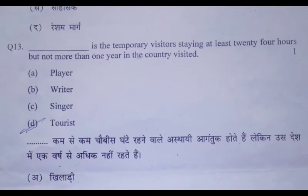Question 13: Dash is the temporary visitor staying at least 24 hours but not more than 1 year in the country visited. A: Player, B: Writer, C: Singer, D: Tourist.